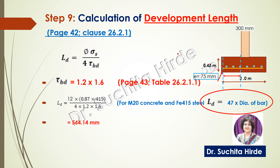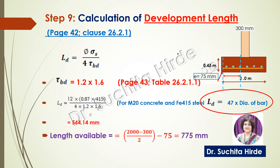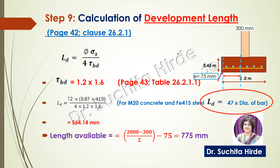This calculated development length must be less than the length available from the face of the column. Length available = (total footing length − column width) ÷ 2 − end cover of 75 millimeter = (2000 − 300) ÷ 2 − 75 = 775 millimeter. Since 775 millimeter is greater than the required development length of 564 millimeter, it is satisfactory.